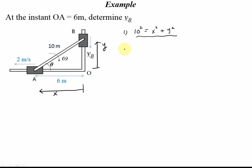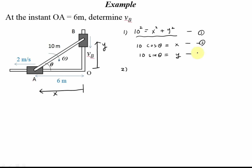We also have another geometric configuration: 10 cosine theta equals X and 10 sine theta equals Y. Now let's take the derivative. We have three equations — the Pythagorean one, and these two trigonometric ones. Taking derivatives gives us our velocity relationships.